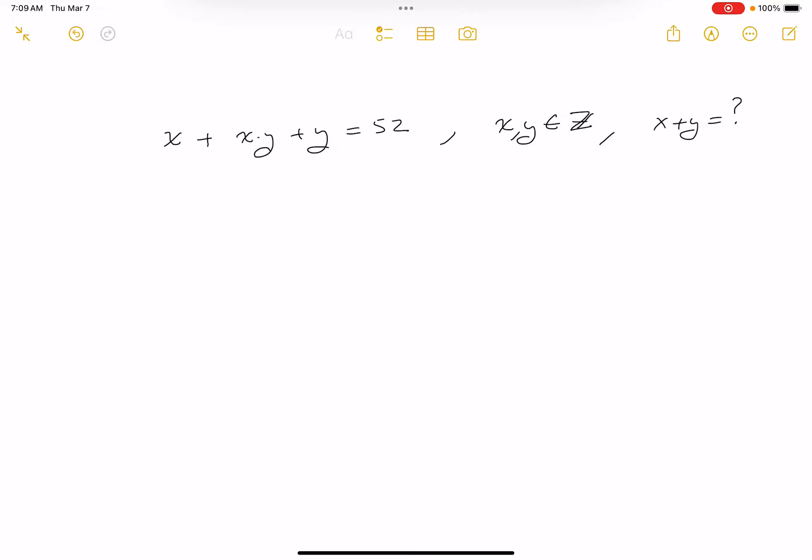All right, a couple ways of doing it. The first way I looked at it was I wanted to solve for y. If you do that, I'll write down what you get: y times x plus 1 equals—what I do is factor out y from that—and then I get 52 minus x. The next thing I would do is divide both sides by x plus 1.